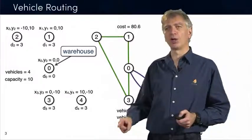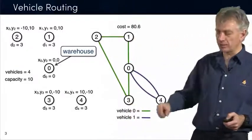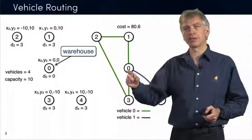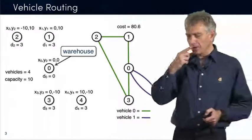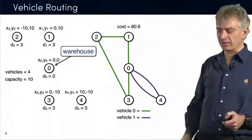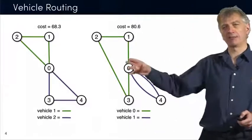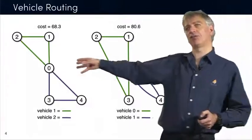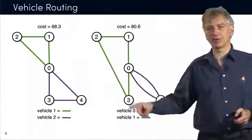So the weight that you are picking up at every one of these locations can never exceed 10. This is the warehouse — not depot, warehouse. And so this is essentially one tour which has a cost of 80.6. That's the distance traveled by the vehicles. You see one vehicle here — I believe this is green — and another one which is probably purple. They satisfy the capacity constraints and they visit every customer exactly once.